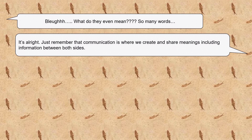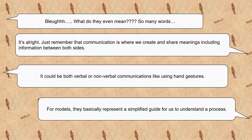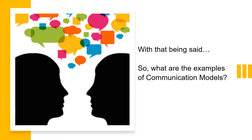Just remember that communication is where we create and share meanings, including information between both sides. It could be both verbal or non-verbal communications, like using hand gestures. For models, they basically represent a simplified guide for us to understand a process. So what are the examples of communication models?